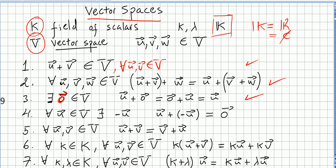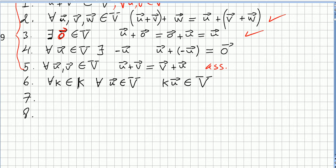This is the identity for vector addition. Fourth axiom: for any vector in the vector space there is a symmetric vector, so if we add u plus minus u we get zero. Fifth axiom: for any vectors u and v in the vector space, vector addition is commutative — u plus v is the same as v plus u.